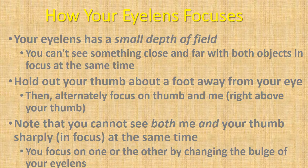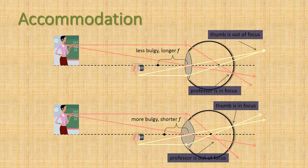Your eye lens has a small depth of field — you can't see something close and far with both objects in focus at the same time. Hold out your thumb about a foot away from your eye, then alternately focus on your thumb and on something just above it. Note that you cannot focus on both at the same time; you focus on one or the other by changing the bulge of your eye lens.